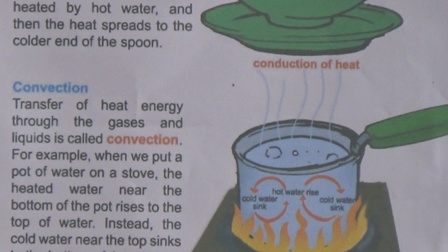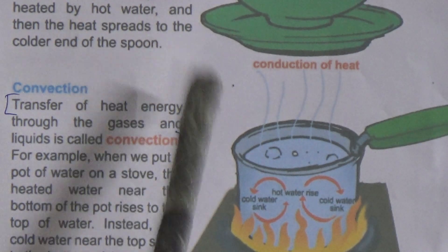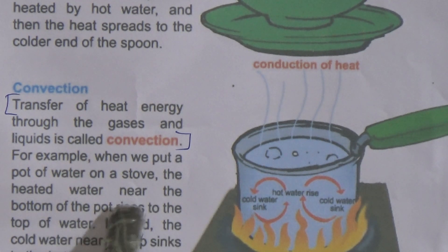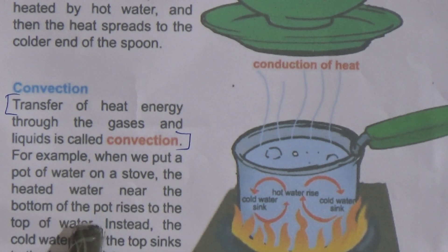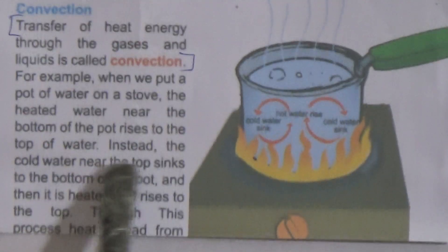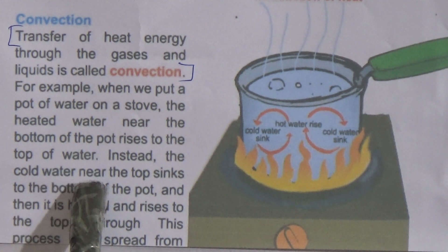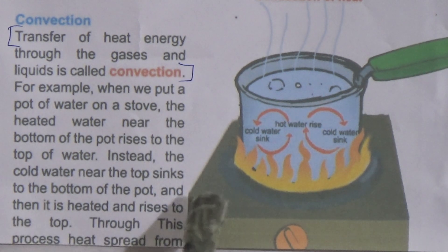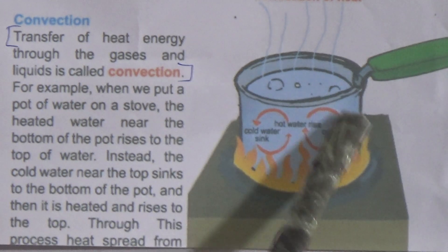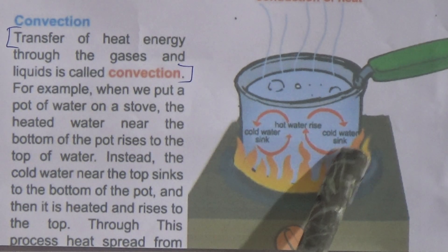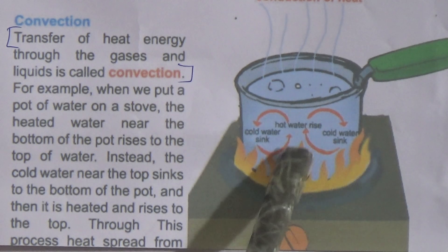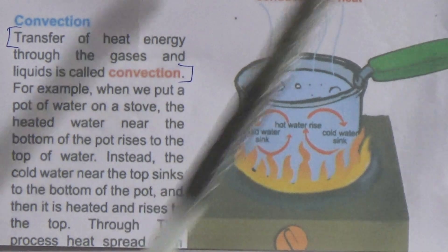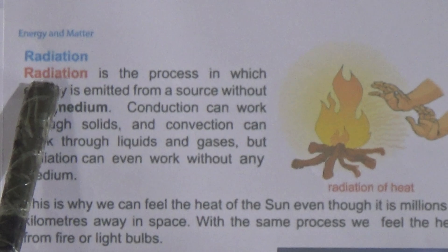For example, when we put a pot of water on the stove, the heated water near the bottom of the pot rises to the top, while the cold water near the top sinks to the bottom of the pot and is then heated and rises again. Through this process, heat is spread from bottom to top. If you follow the arrows in the picture, the water moves down and up in a rotation, until the total water in the pot becomes heated.